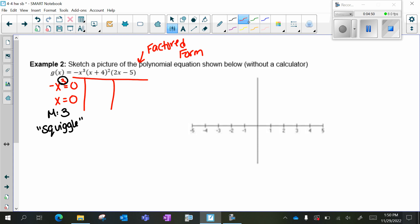My next is (x + 4) = 0, which is x = -4. My exponent is two, so it has a multiplicity of two. It's going to bounce.